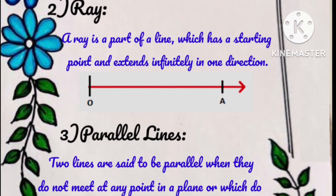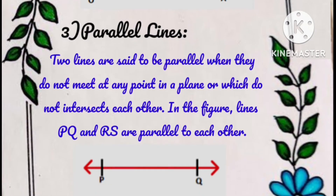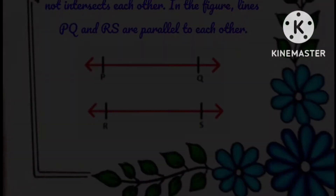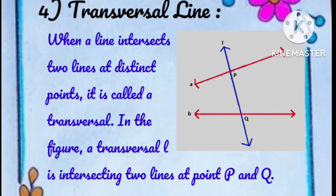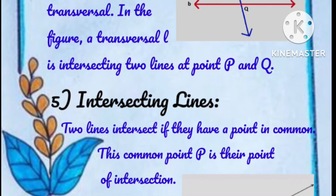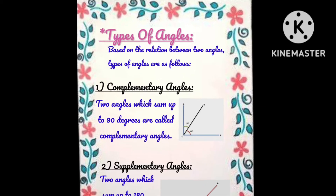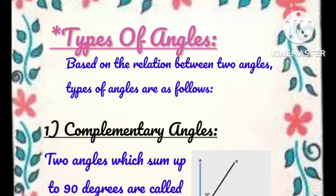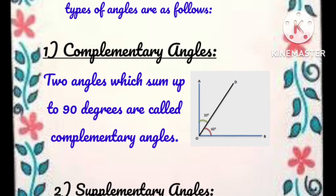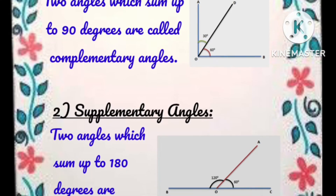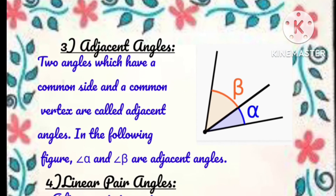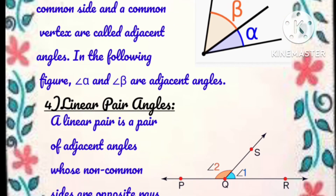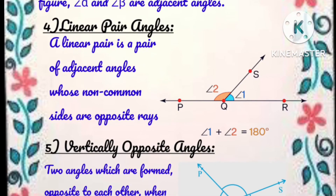Types of lines continue with: parallel lines, transversal line, and intersecting lines. Types of angles include: complementary angles, supplementary angles, adjacent angles, linear pair angles, and vertically opposite angles.